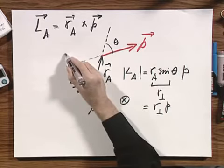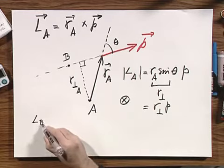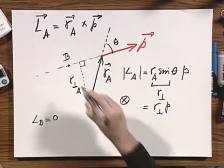If I had chosen point B anywhere along this line, then L of B would be zero. Already you see L of A is not the same as L of B.